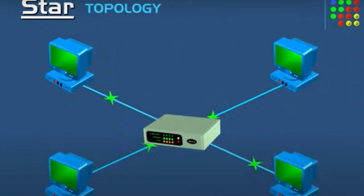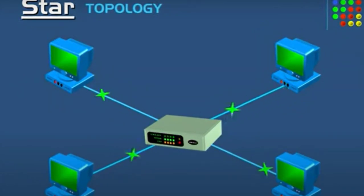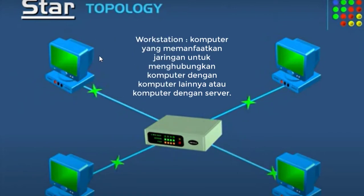Topologi star atau bintang merupakan topologi yang masing-masing workstation memiliki jalur yang terhubung melalui server atau hub. Di tengah ini terdapat hub, kemudian terdapat beberapa unit komputer yang terhubung terhadap hub.